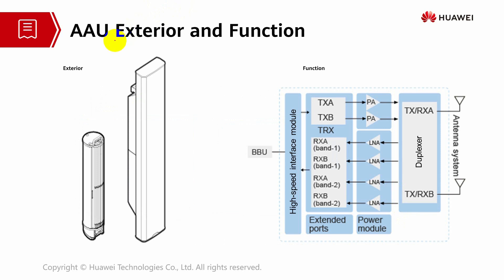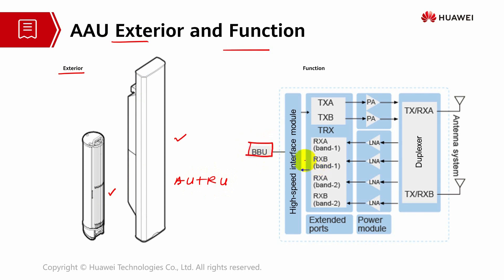This is the exterior and function of an AAU module. Both AU and RU systems are integrated and connect to a BBU via a high-speed interface module. It includes a TRX transceiver module with extended ports and variety of bands, power amplifier, low noise amplifier, power module, duplexer, and antenna system — all integrated in one module known as the AAU system.